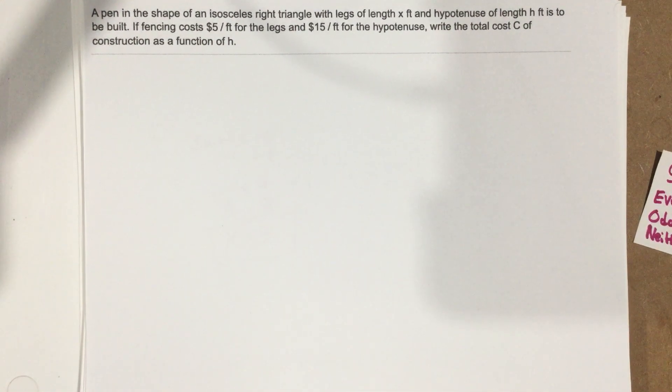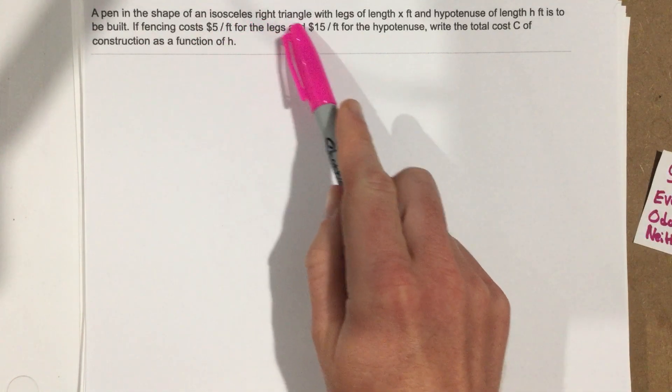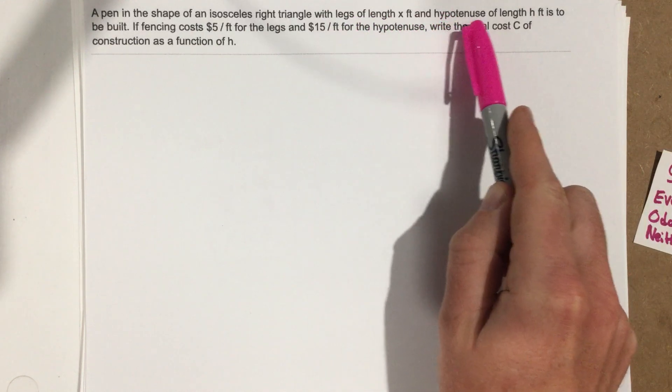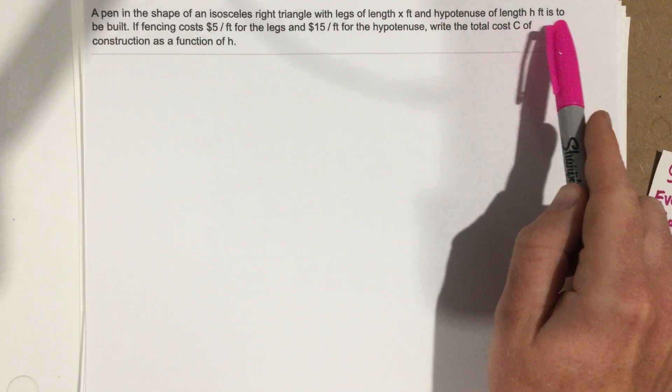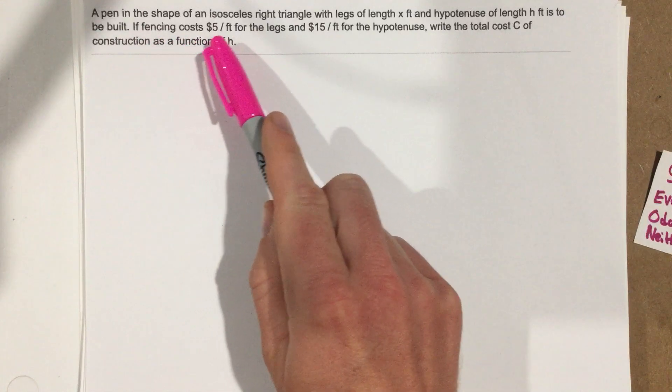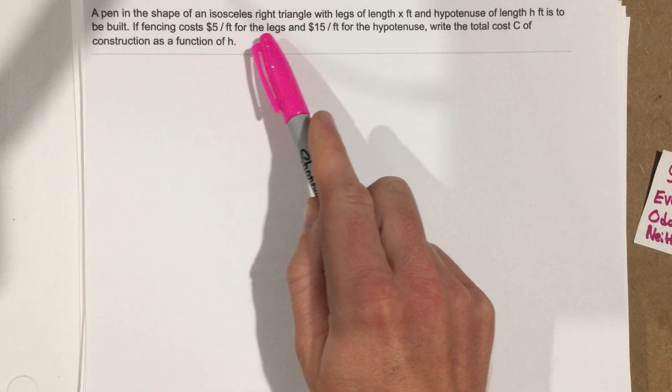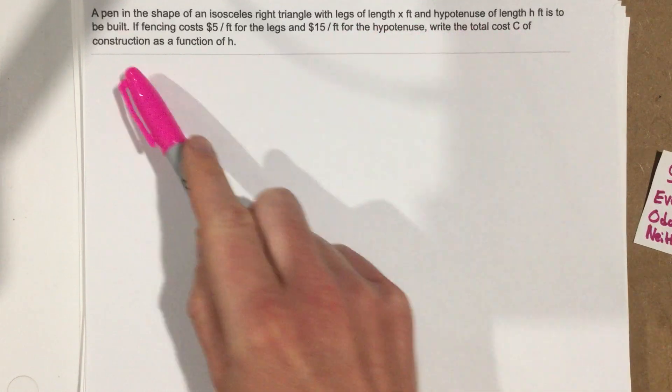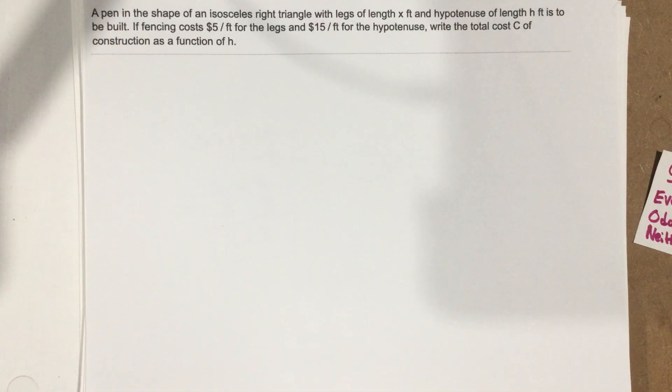This is problem number 10 from section 1.1. In this problem, they say a pen in the shape of an isosceles right triangle with legs of length X and hypotenuse of length H is to be built. If fencing costs $5 per foot for the legs and $15 per foot for the hypotenuse, write the total cost C of construction as a function of H.